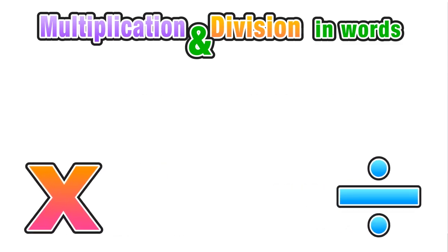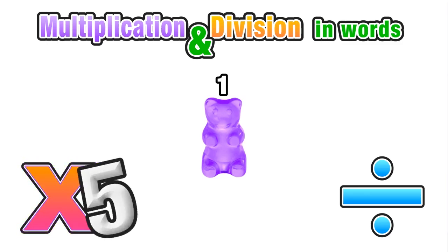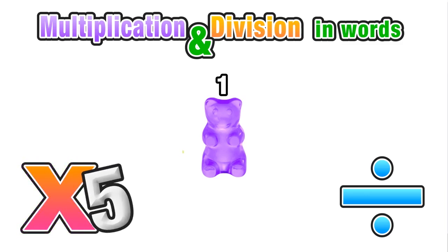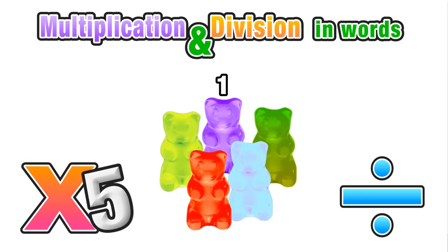Think of it this way: if you have one gummy bear and you multiply that one gummy bear by five, you would have five gummy bears since one times five equals five.